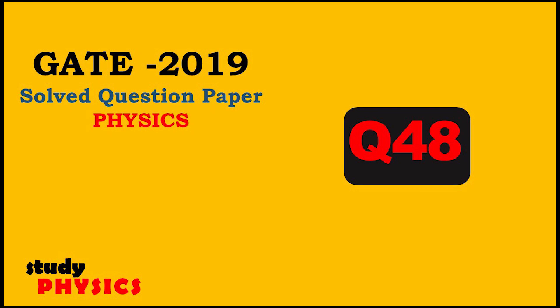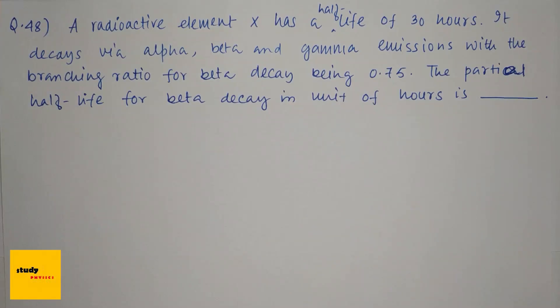Hi everyone, welcome to Study Physics. This is question number 48. A radioactive element X has a half-life of 30 hours. It decays via alpha, beta, and gamma emissions with the branching ratio for beta decay being 0.75.